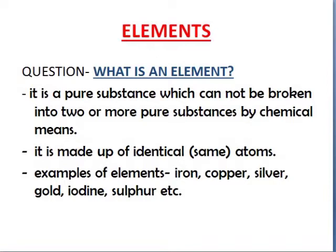Examples of elements are iron, copper, silver, gold, iodine, sulphur etc. All these examples are made up of the same kind or similar kind of atoms. There are no other kinds of atoms involved in these elements. That is why they are called elements.